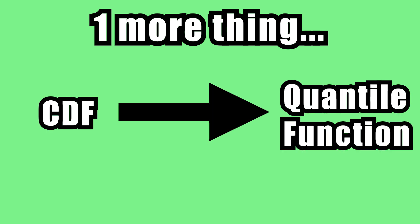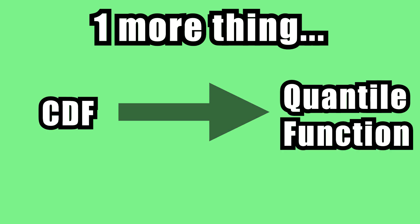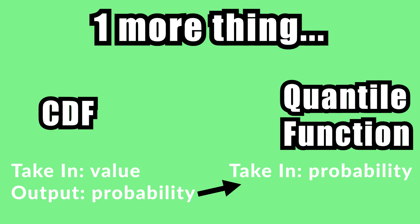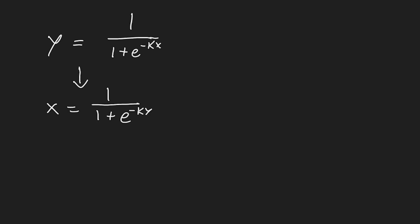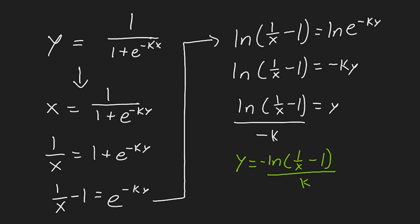Convert our CDF into a quantile function, or inverse CDF. With the CDF, we took in a value and outputted a probability. But with the quantile, we take in a probability and output a value. All we have to do to get this quantile function is just swap the x's and y's and solve for y.